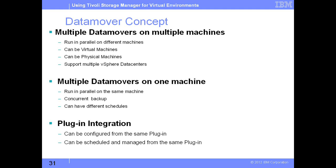All the data movers you have need to be pointed to a common data center. If they are pointed to a common data center, then any one of them can be selected for backup of the VMs inside that data center. Multiple data movers can reside on multiple machines. You would need multiple data movers when the infrastructure is so large that backups cannot complete in a day — in that scenario, you want backups running in multiple parallel sections. You can then assign which VMs should be backed up by each data mover.